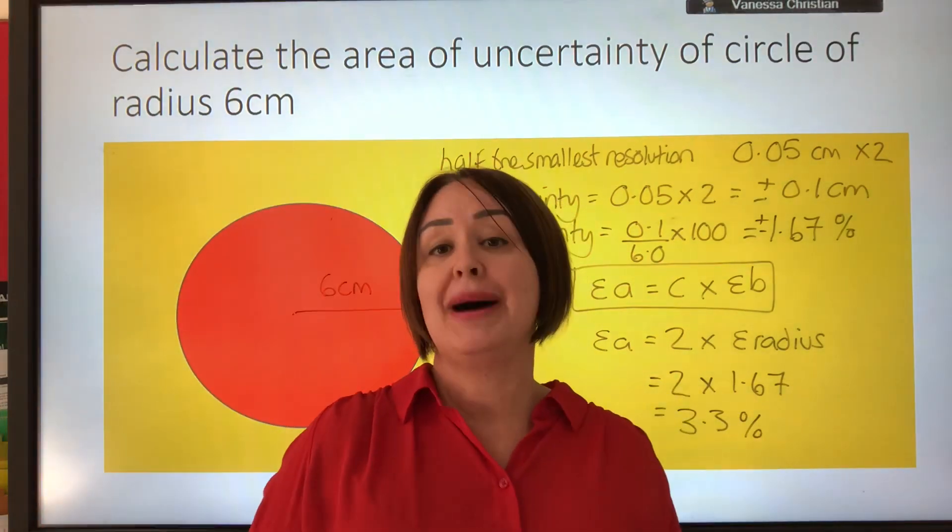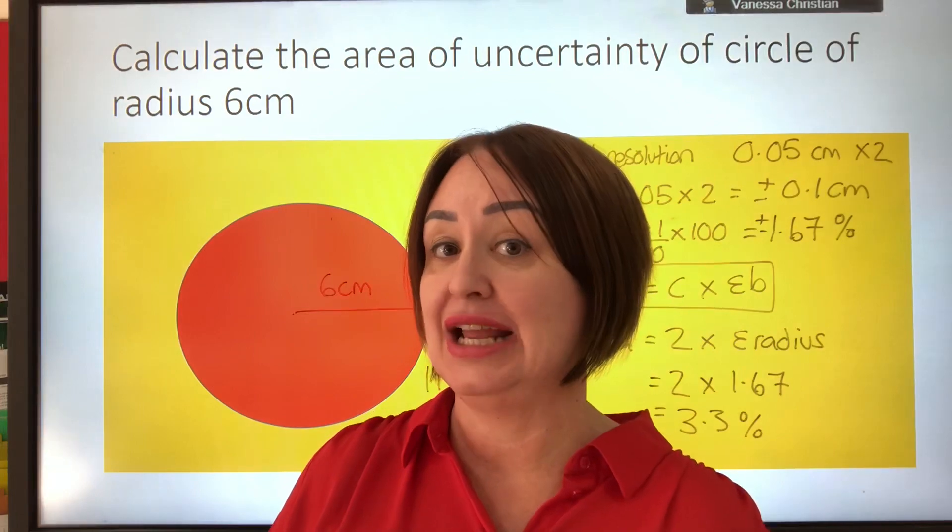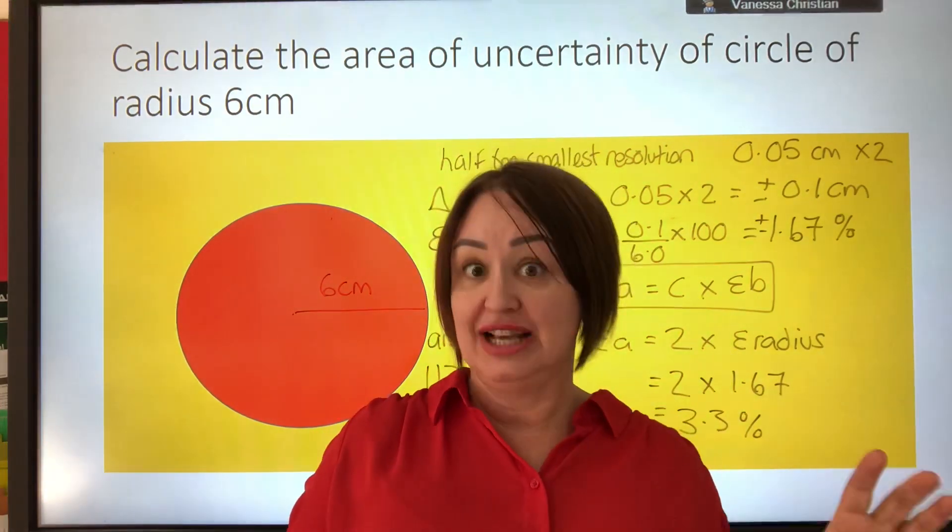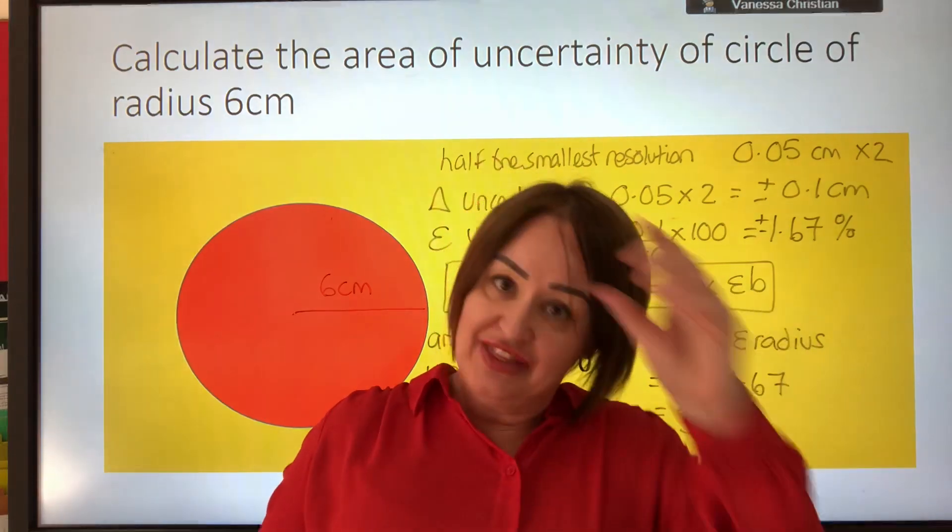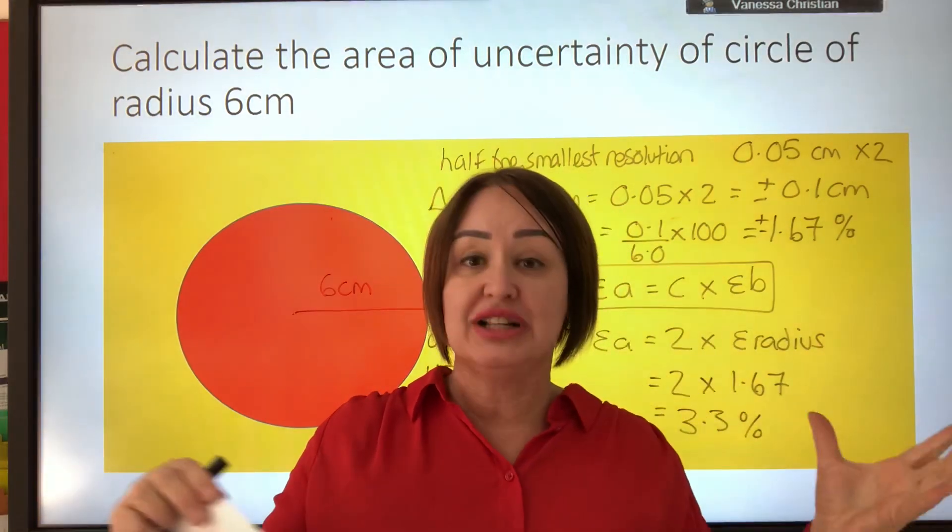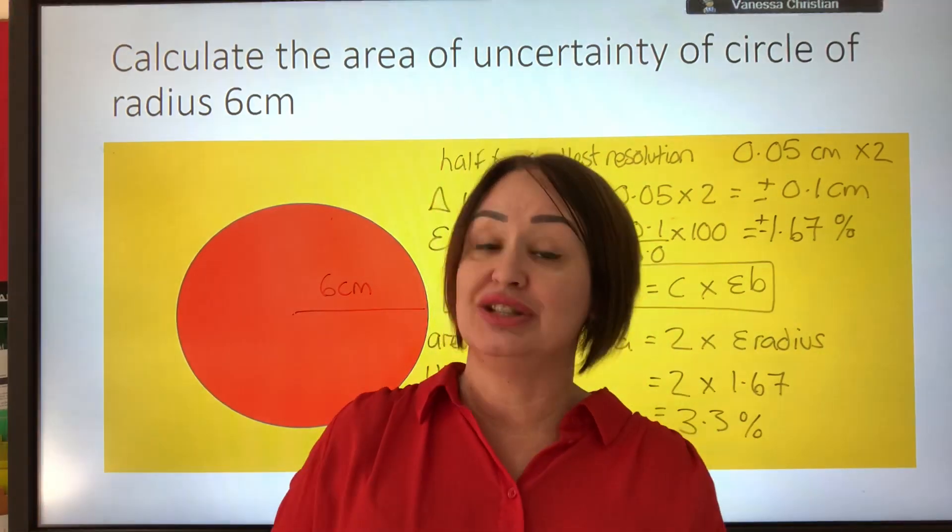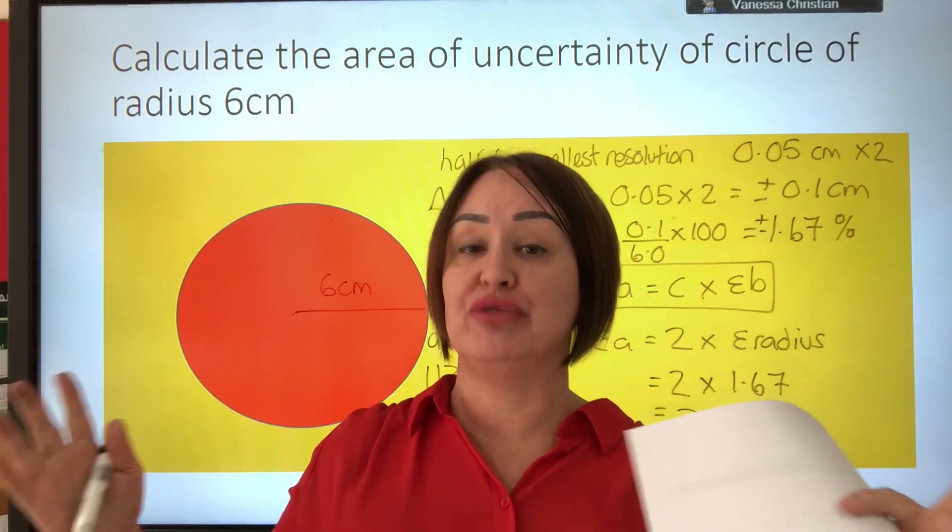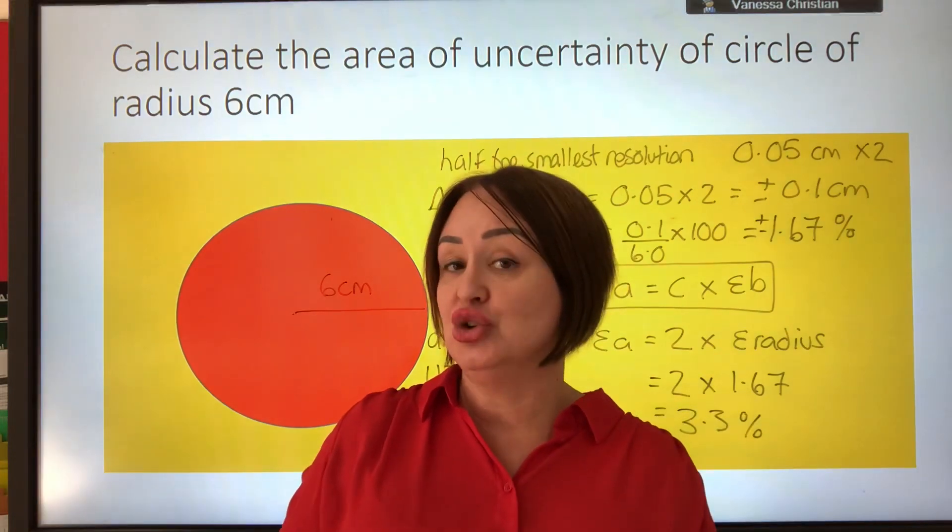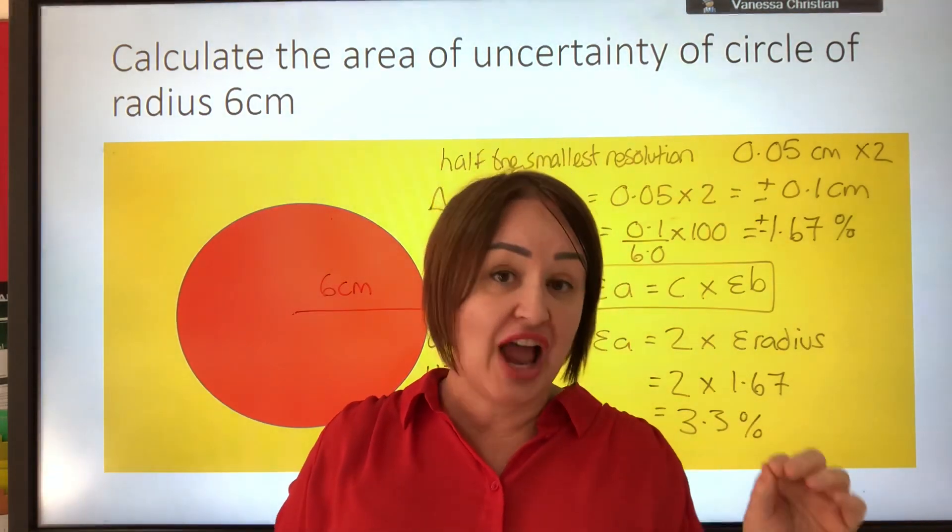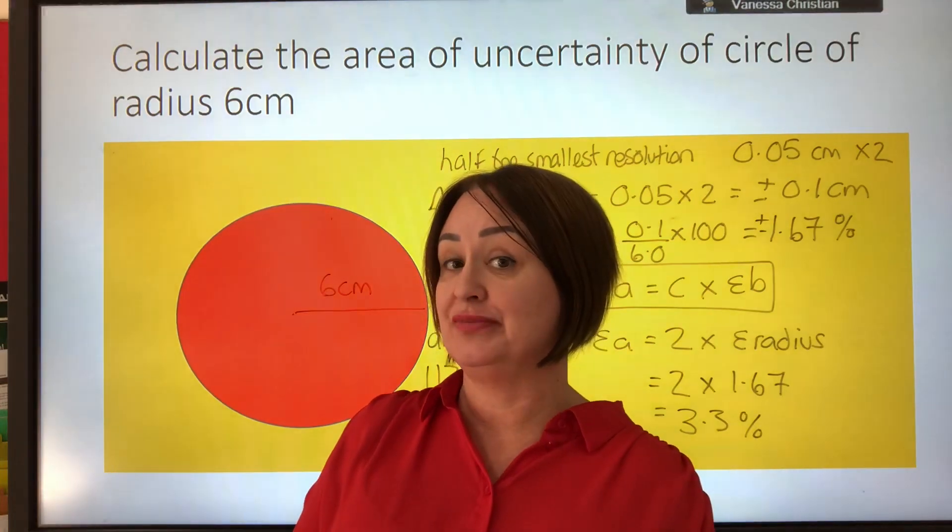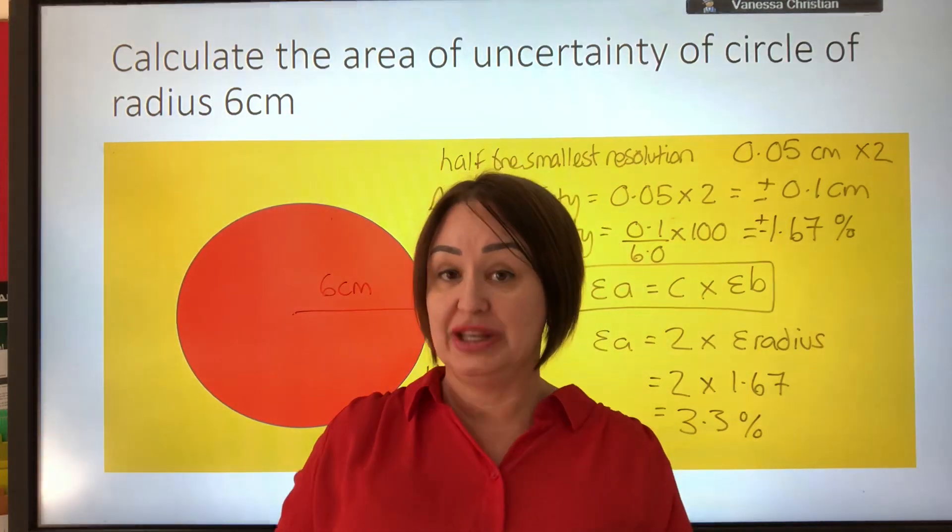The question might not want the percentage uncertainty. It might want the actual area of the circle that is uncertainty. We said just earlier that actually it's more appropriate to ask for the percentage uncertainty because it relates to the size of the line when we started talking about the radius. But you need to be clear in your question - are you being asked for the area of uncertainty or are you being asked for the percentage uncertainty? Let's work it back to the area.